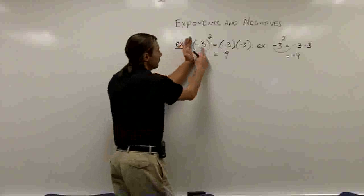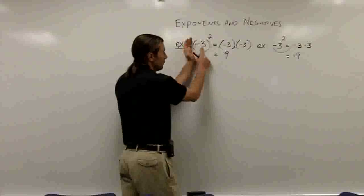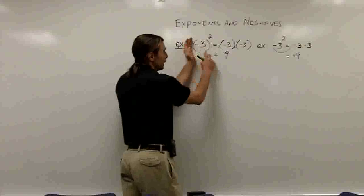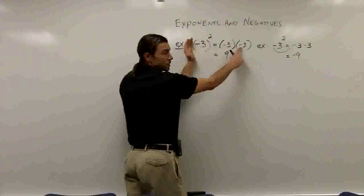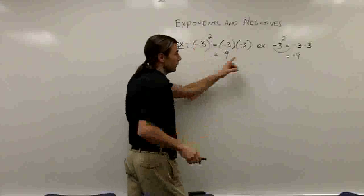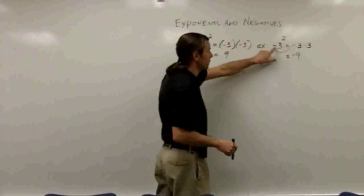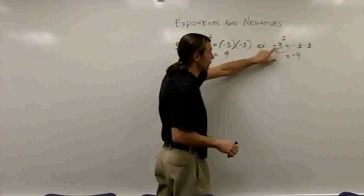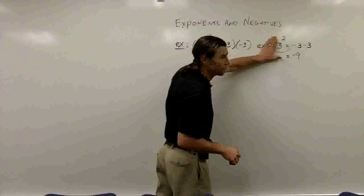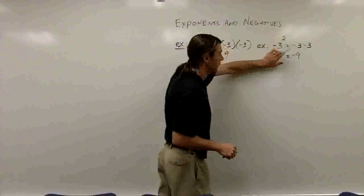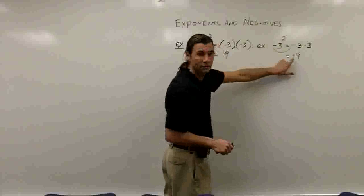So if the negative is inside the parentheses, it means we have to multiply a negative number times a negative number. If the negative is outside and not in parentheses, we only take the 3 to the second power, and we end up with a negative answer.